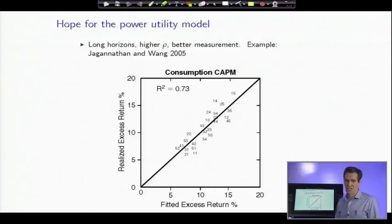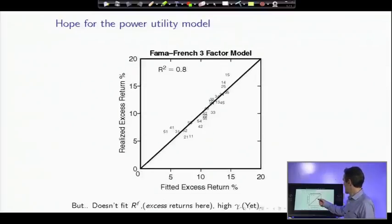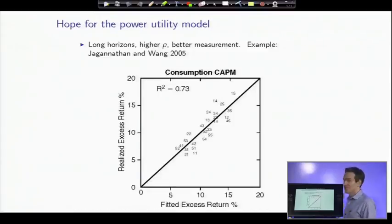This is an example from Jaguar, Nathan, and Wang, a paper in the readings. They did the consumption-based model. They measured it December-to-December, Christmas shopping-to-Christmas shopping. And look at the nice way that excess returns line up with the covariance with consumption growth in December-to-December data. As a comparison, there's the Fama-French three-factor model. So that's how the Fama-French model lines up. That's how the consumption-based model lines up. Pretty good, huh? There's hope at last if you measure things a little bit better.